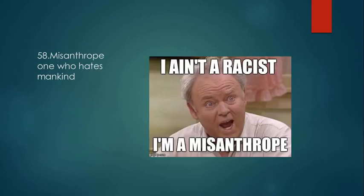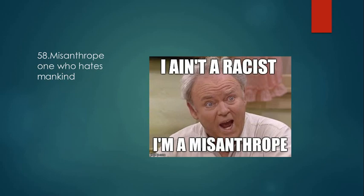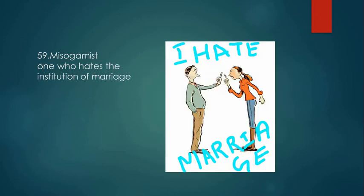Misanthrope means one who hates mankind. A racist hates other races, but a misanthrope hates all of mankind. Misogamist means one who hates the institution of marriage — a person who does not believe in marriage and hates it.